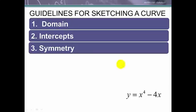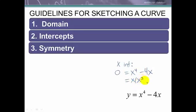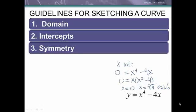For the intercepts, remember that we find x-intercepts by substituting 0 for y. We can factor out an x and have x(x³ - 4) = 0, so x equals 0 or x equals the cube root of 4, which is about 1.6. So our x-intercepts are at (0, 0) and at (∛4, 0).